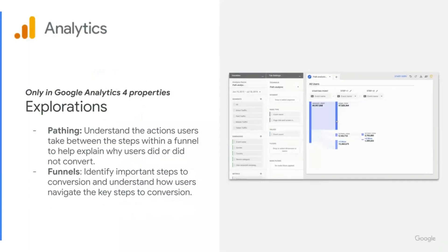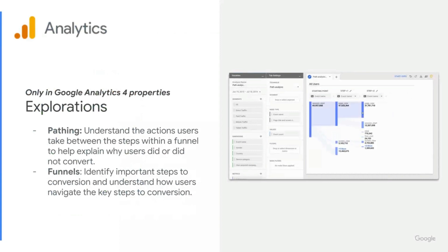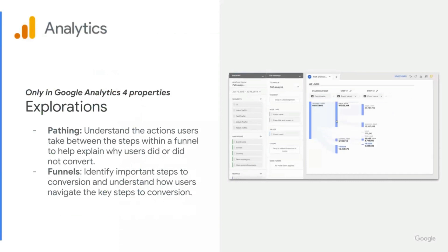Google Analytics 4 properties also offer a wide range of additional reports that you won't find in the Google Analytics for Firebase user interface, and these are in the exploration section. First, we have pathing. This helps you to understand the actions that users take between steps within a funnel to help explain why users did or did not convert. You can select out multiple paths at a time, as you can see in the animation, really allowing you to dig into these different paths that users might take through your app or even your website.